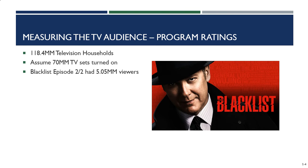Let's walk through an example measuring the TV audience for an episode of Blacklist. Here's what we know: there are 118.4 million television households — that's a given number that never changes. We'll assume 70 million TV sets are turned on. And the Blacklist episode that aired on February 2nd of this year had 5.05 million viewers. This is the type of given information you will have as you start to measure the TV audience.